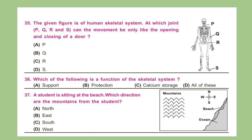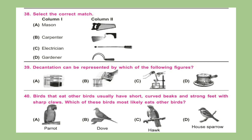Question 37: A student is sitting at the beach. Which direction are the mountains from the student? Question 38: Select the correct match. Column 1 and Column 2 are given here. Question 39: Decantation can be represented by which of the following figures?